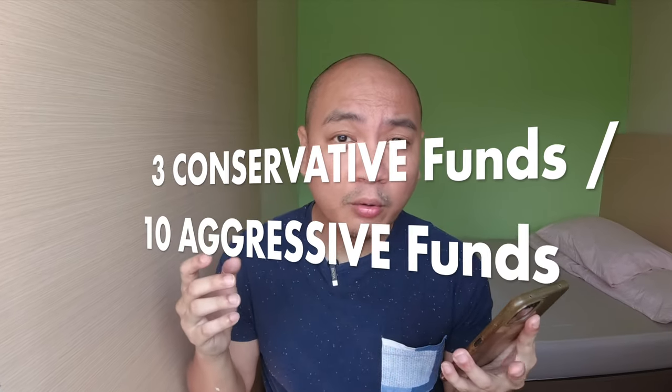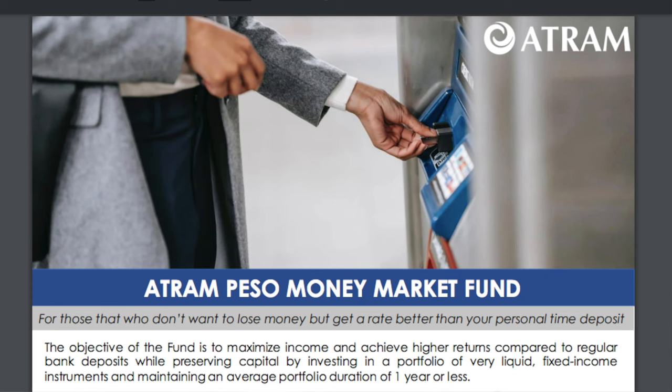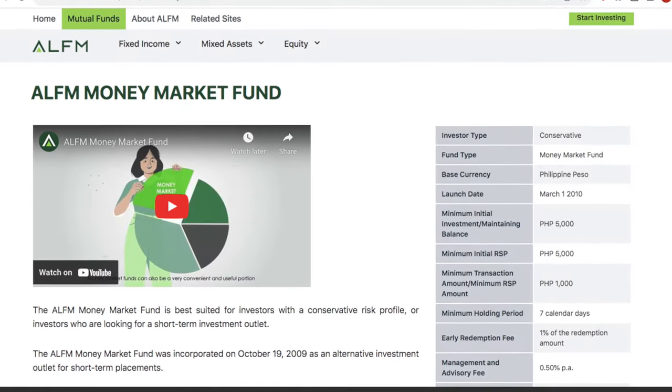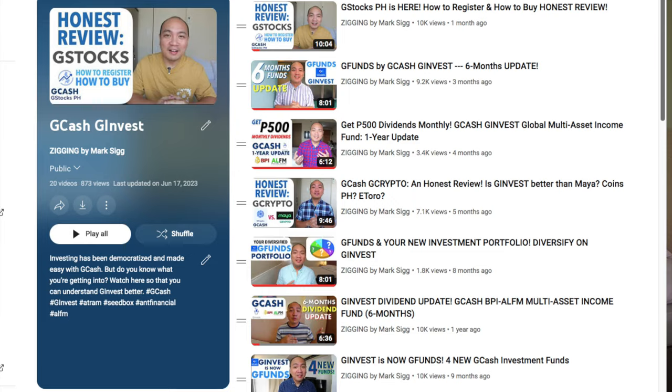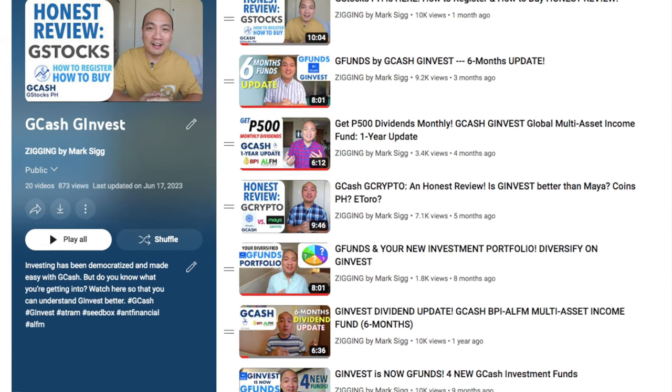There are three funds on the conservative side. If you're not really familiar with stocks and equities, then these would be the funds for you. These three would be the Atram Money Market Fund, the ALFM Money Market Fund, and the Atram Total Return Peso Bond Fund. If all of this is starting to sound very familiar, it should if you've already been watching my GCash G-Invest videos — they are also currently working with Atram and ALFM.